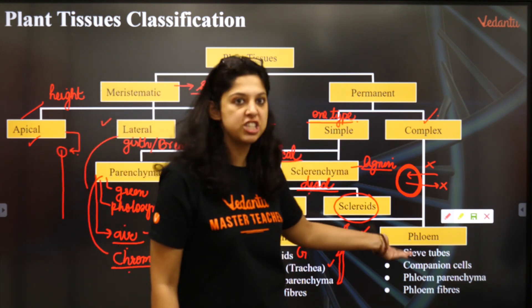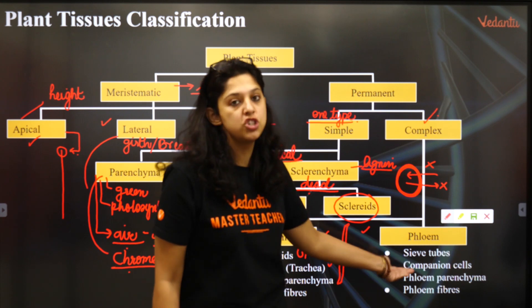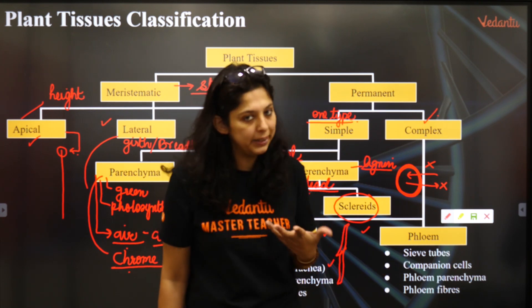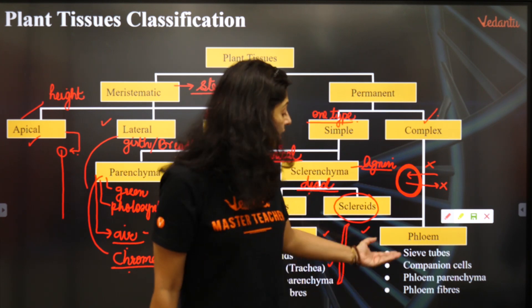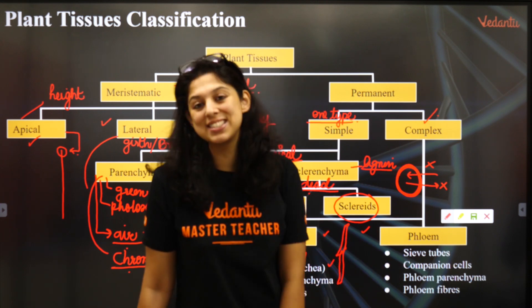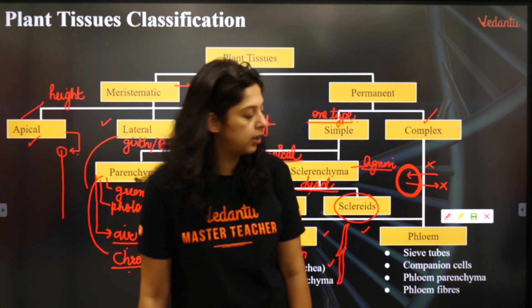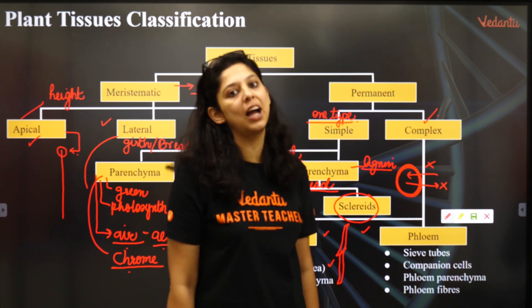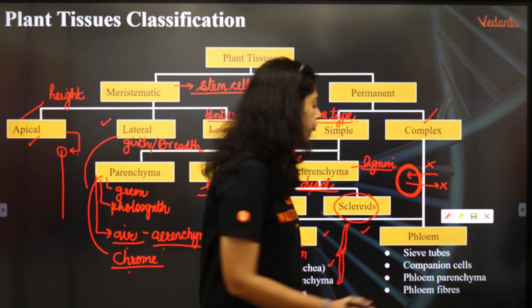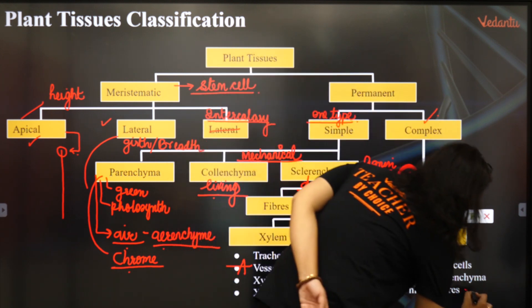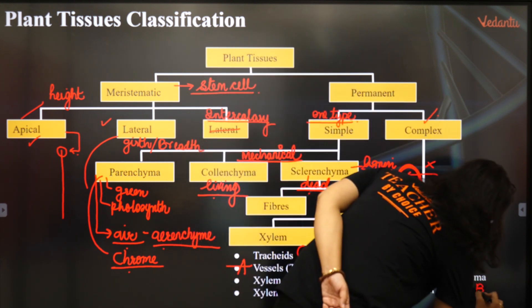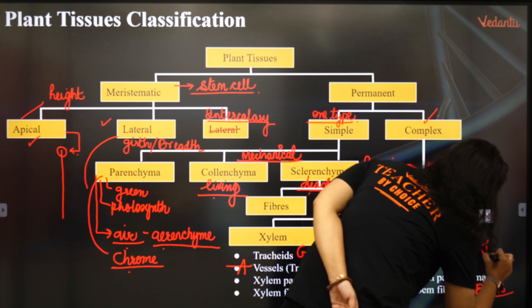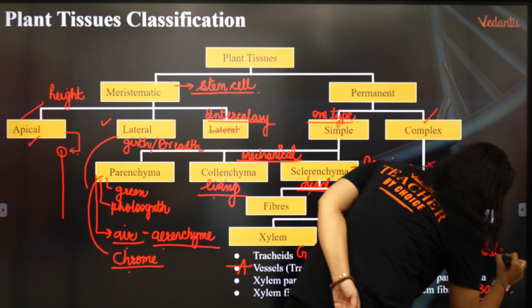Phloem is made up of sieve tubes — they are located underneath and not completely hollow, supported by companion cells which have a nucleus. Phloem parenchyma and phloem fibers are also present. Phloem fibers are called bast fibers — they are found in jute. This is an MCQ question.